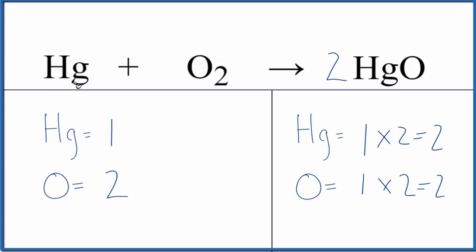So we've balanced the oxygens, and mercury is all by itself. When we change the mercury, we won't change the number of oxygens. So we can just put a 2 here, 1 times 2, that will give us 2. This equation is balanced.